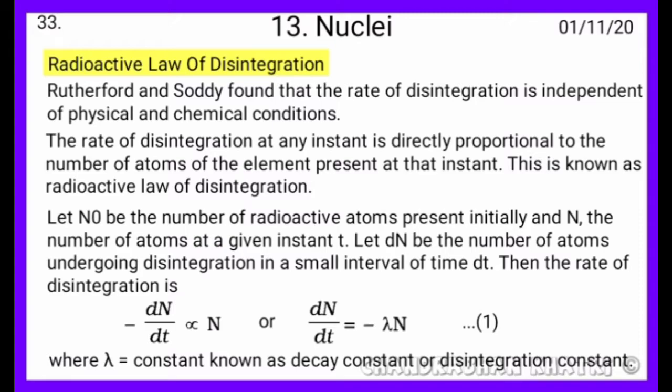Let n naught be the number of radioactive atoms present initially and capital N the number of atoms at a given instant small t. Let dn be the number of atoms undergoing disintegration in a small interval of time dt.